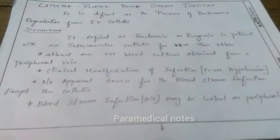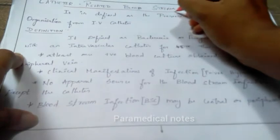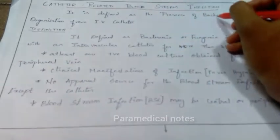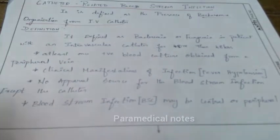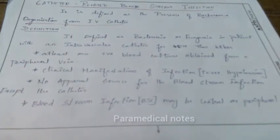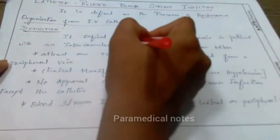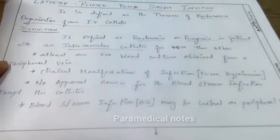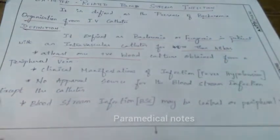First, we have to write the heading boldly: catheter-related bloodstream infection. Under that, write the definition. It is defined as the presence of bacteremia or fungi in a patient with an intravascular catheter for more than 48 hours. If a catheter is present for more than 48 hours, bacteremia and fungemia can occur easily.